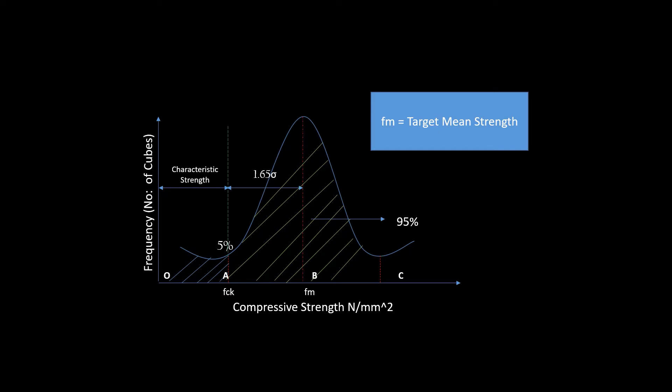If we analyze the standard deviation values for normal distribution curve, we get the distance between A and B as 1.65 sigma, and the mean of the curve is said to be at B.